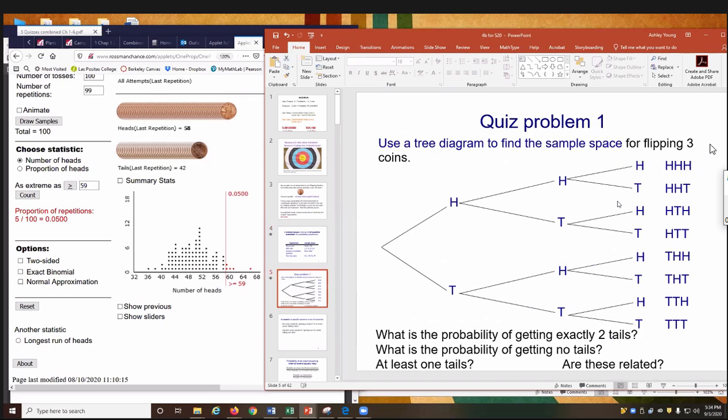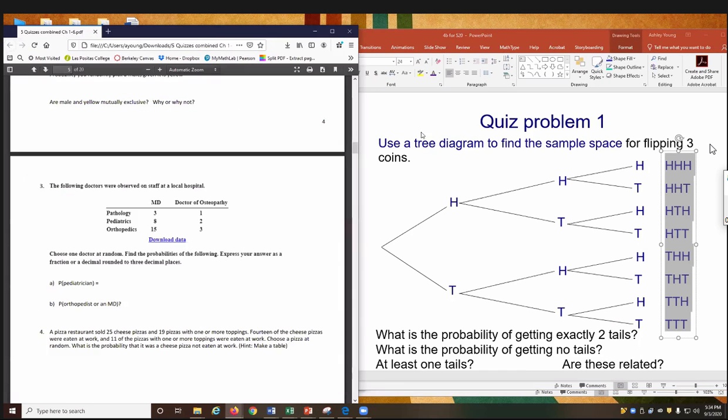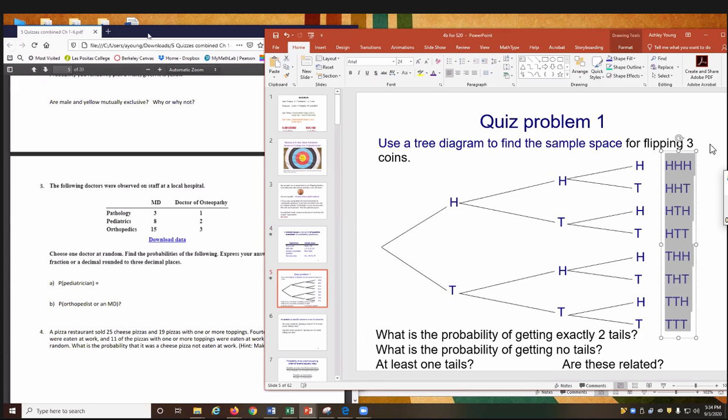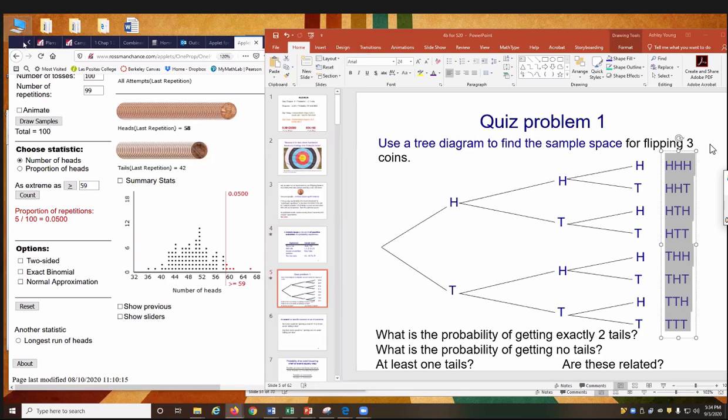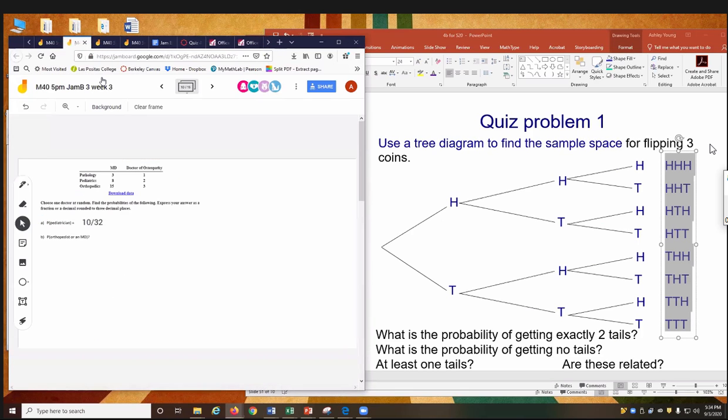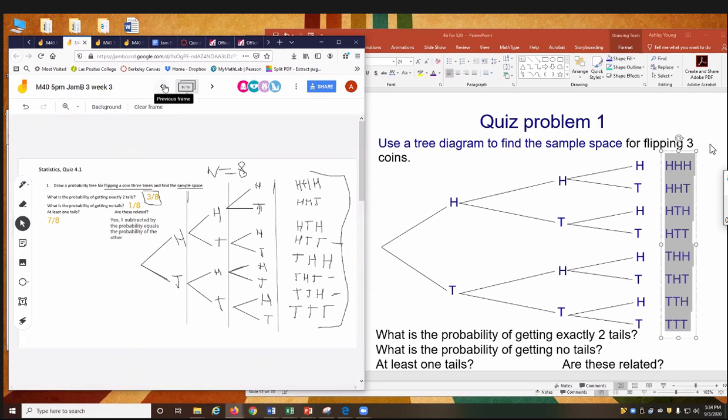Here's your quiz problem number one. The tree diagram, you have to show us something like this. I think all you guys kind of got that pretty well. And then this is your sample space, all possible outcomes. What was the probability of getting exactly two tails? Let's see what some people said. We'll do that. It's easier. Exactly two tails. Three eighths. Yep. That's good. It says exactly, exactly two tails. Let's see. That's this guy. Oh yeah, they marked them off here. One, two, three. Good.